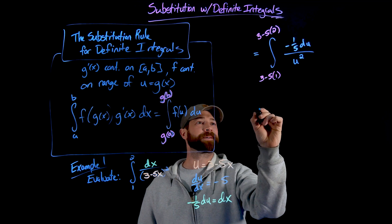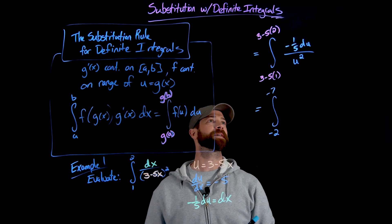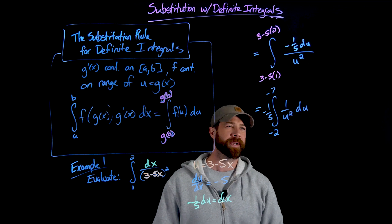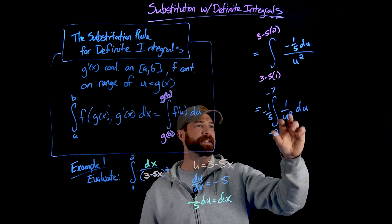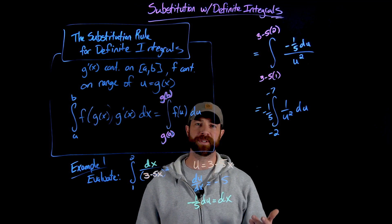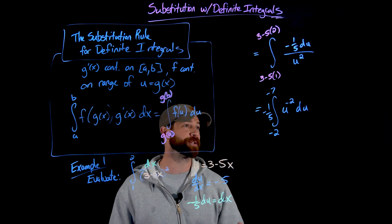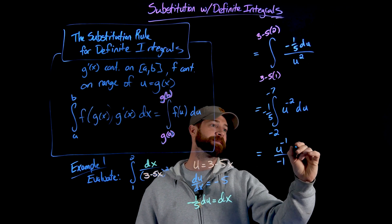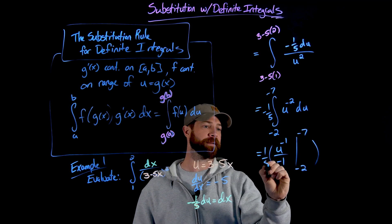Cleaning things up: 3 minus 5 is negative 2, and 3 minus 10 is negative 7. Pulling out the negative one-fifth gives negative one-fifth times the integral of 1 over u squared du, from negative 7 to negative 2. Note that 1 over u would give a natural log, but since this is 1 over u squared, I use the anti-power rule. Rewriting as u to the negative 2, anti-differentiating gives u to the negative 1 divided by negative 1, evaluated from negative 7 to negative 2, all multiplied by negative one-fifth.